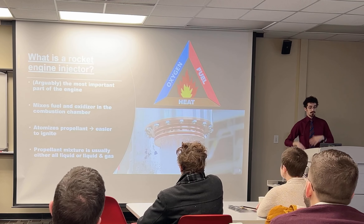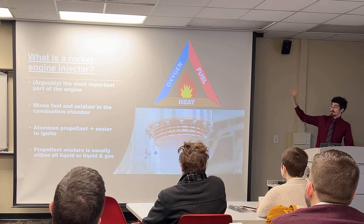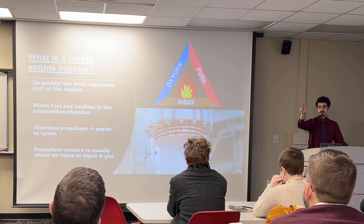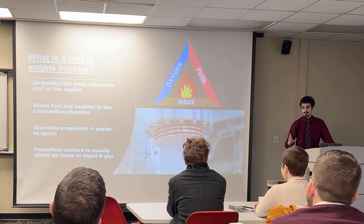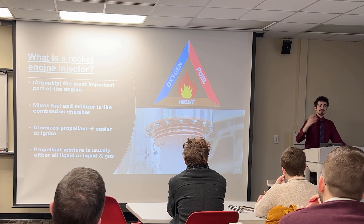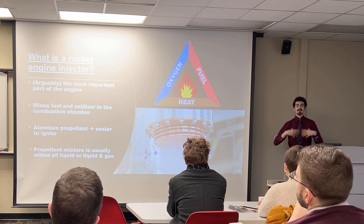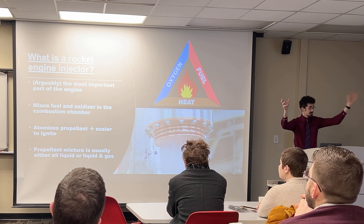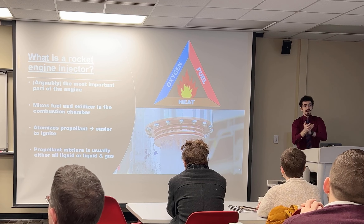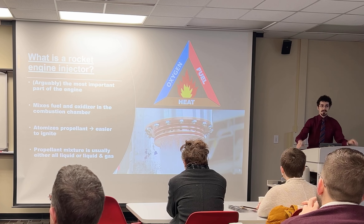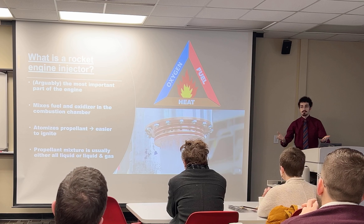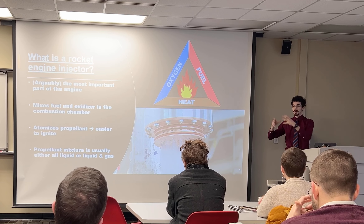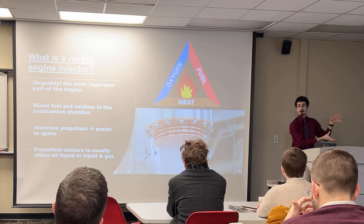That brings us to the injector. Looking at the fire triangle, we need three things for combustion to occur: oxygen, fuel, and heat. The heat is going to be supplied by our ignition system, and once ignition occurs, it's going to be sustained by the heat from the combustion gas. So all our injector needs to do is take the oxidizer and the fuel, mix them together, and then atomize that mixture — break it up into small droplets. This makes it easier to combust, like how it's a lot easier to burn small bits of kindling rather than a giant log at once.